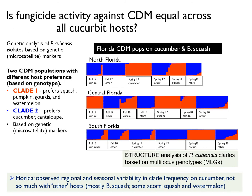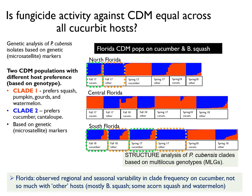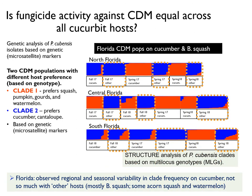We recently performed a similar study in Florida using the same genetic markers to examine isolates from cucumber and other hosts, mostly butternut squash and watermelon. We collected isolates from north, central, and south Florida across spring and fall production seasons in 2017 and 2018. Similar to results from North Carolina, we noticed that the proportion of clades differed between cucumber and other hosts. However, these results varied from season to season and between years. We also noticed that cucumber P. cubensis populations could vary dramatically between seasons and among regions, while populations on other hosts, mostly butternut squash, were more stable. These results indicate that P. cubensis populations can exhibit seasonal variation across cucurbit hosts and across regions.